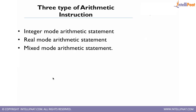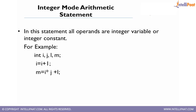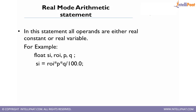There are three types of arithmetic instructions: integer mode arithmetic, real mode arithmetic, and mixed mode arithmetic. In integer mode arithmetic, all operands are integer values or integer constants. For example: int i, j, l, m; i = i + 1; m = i * j + 1. All operations are performed on integers, so this falls under integer mode arithmetic.